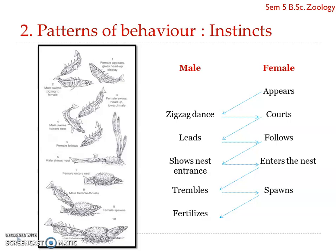The male then guards the nest from all other males as well as enemies, and stays near the nest to protect the eggs and young ones. During the same breeding period, he can also perform courtship rituals with two or three other females and have them lay eggs in the same nest, fertilizing them in the same breeding season. This sequence of behavior is instinctive — it hasn't been taught, nor has the fish seen anyone doing it, yet all three-spined sticklebacks show this similar pattern.